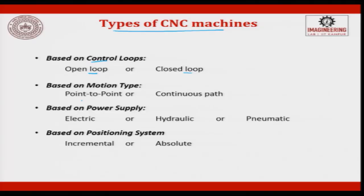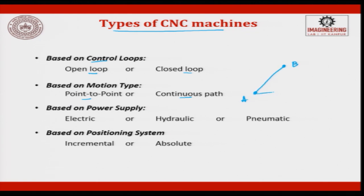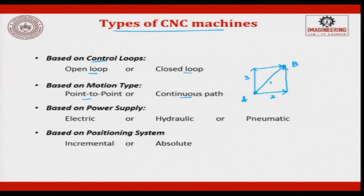The second classification is based on motion type: point-to-point or continuous path control. In point-to-point, the system moves from point A to point B and in between you are least bothered about which path was taken — there are multiple possible ways to reach the destination. Applications include robotic welding, punching, spot welding, and drilling. In continuous path control, the system is concerned about which path to take.